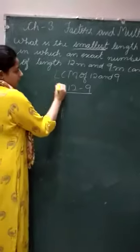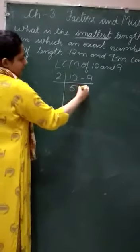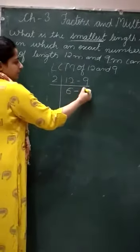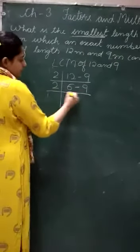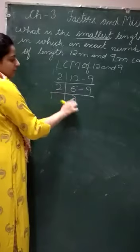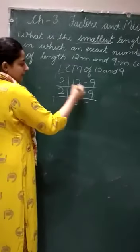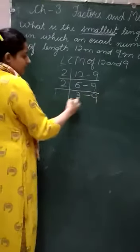Now we will start with the smallest prime number. Now 9 is not divisible by 2 so we will bring this down as it is. Now again I am taking 2. When 6 is divided by 2 we get 3 and 9 is not divisible by 2 so I am bringing it down as it is.